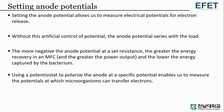In this section, we focus on the importance of setting anode potentials. Setting the anode potential allows us to measure electrical potentials for electron release. Without this artificial control of potential, the anode potential varies with the load. The more negative the anode potential at a set resistance, the greater the energy recovery in an MFC and the lower the energy captured by the bacterium.